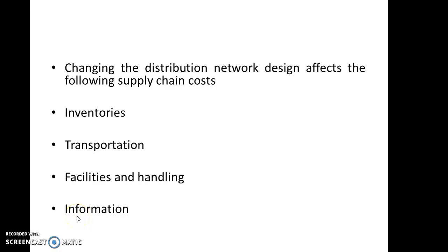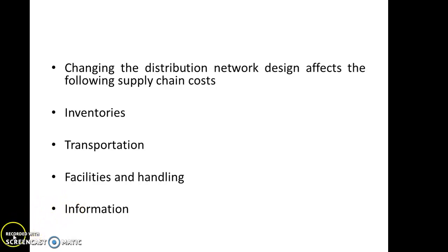The second unit focuses on distribution network design. When you want to change the distribution network design, it affects the following supply chain costs: inventories, transportation, facilities and handling, and information. We have discussed these four points in the drivers of supply chain performance.